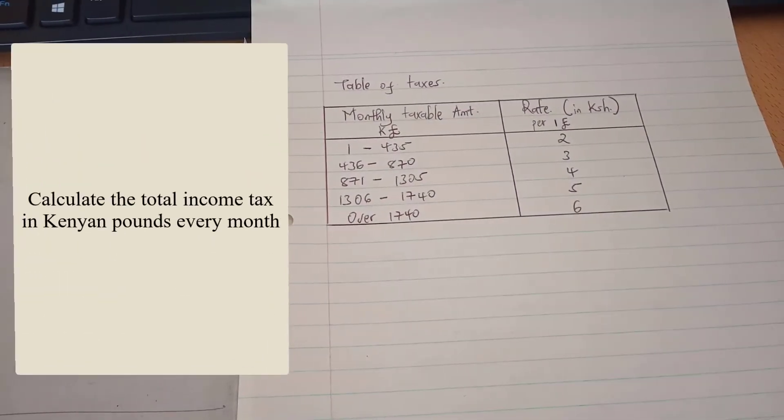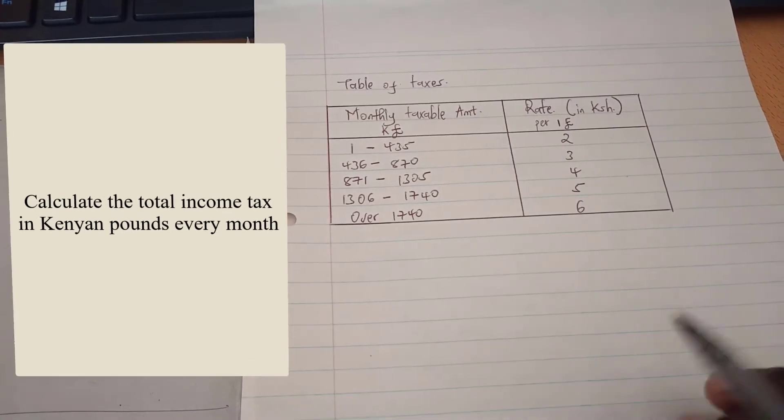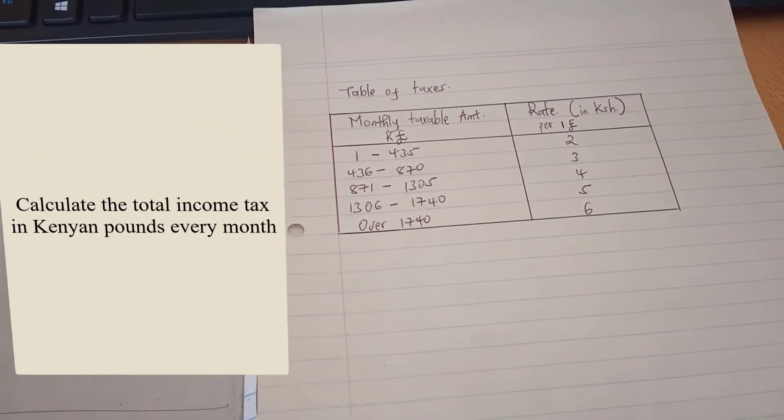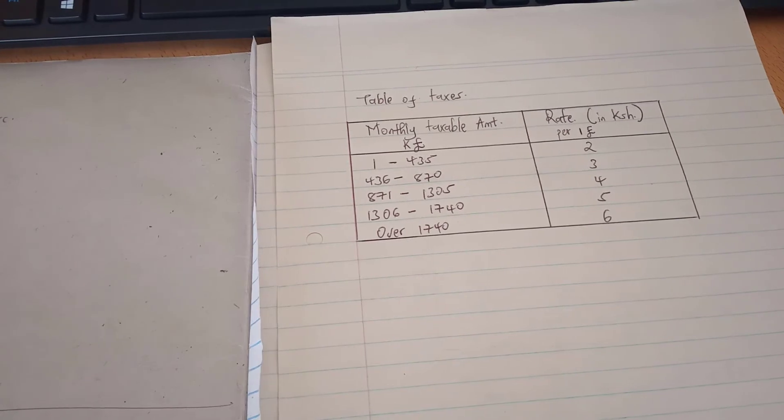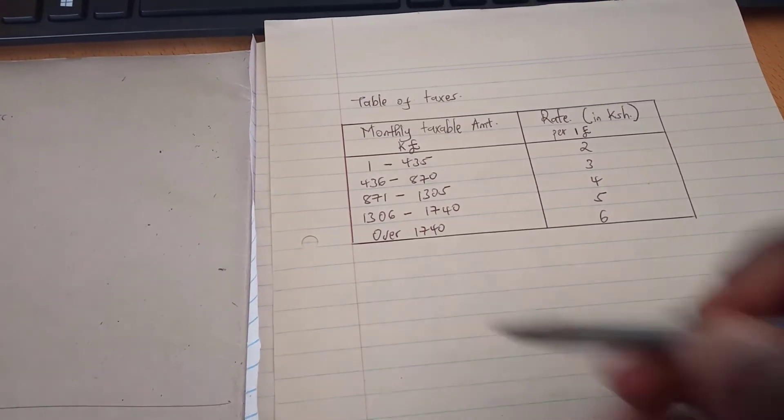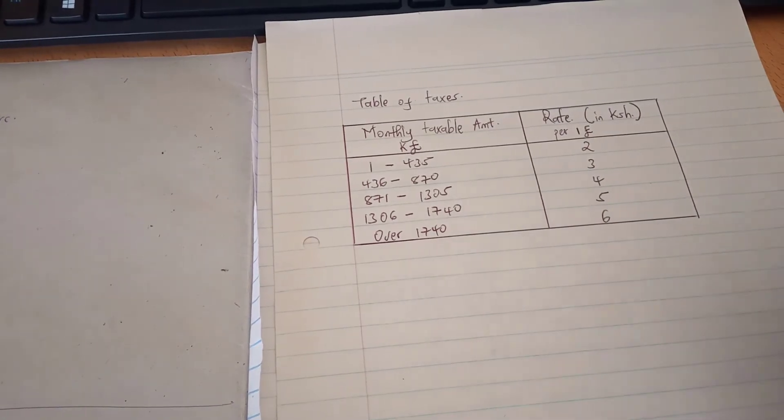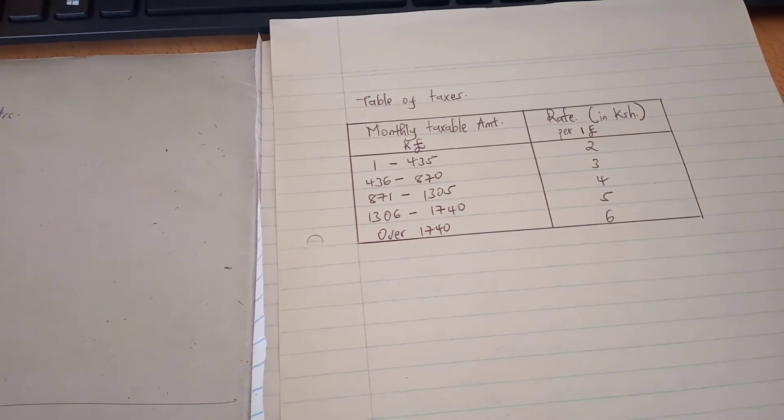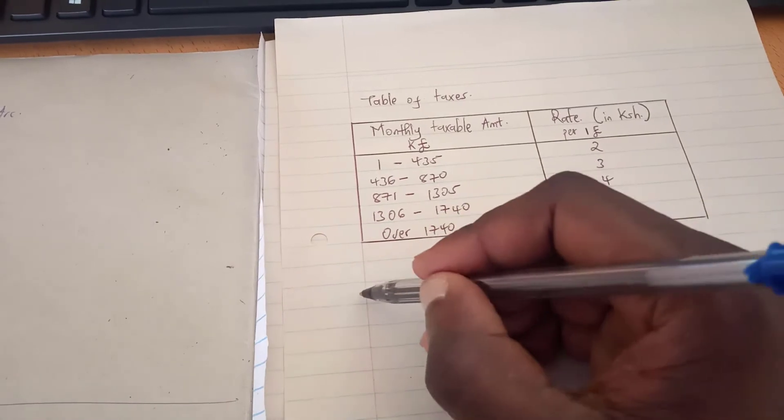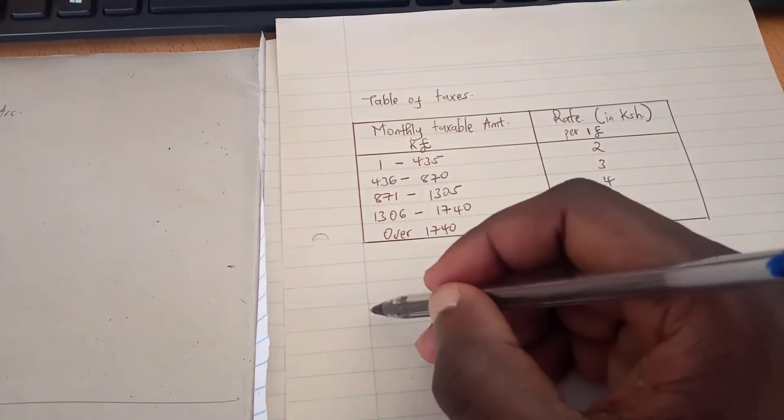The first part of the question simply asks, can you calculate the total income tax, that is the total taxable income, the total amount of money that any tax can be levied on for this particular employee? And that will form our part A of the question.